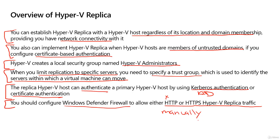It's a bit odd — the firewall exception isn't created automatically for you. When you look at this in the interface, it gives you a pop-up message saying that once you configure Hyper-V replica, you have to go to the firewall and enable these rules. So it will tell you to do it, but it won't do it automatically, which is strange because most other features — like Remote Desktop — automatically create a firewall exception when you enable them. This is just the odd one out.